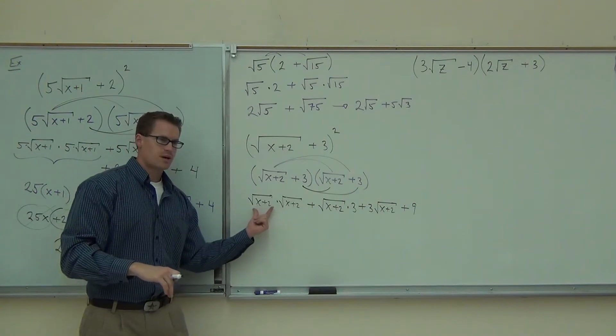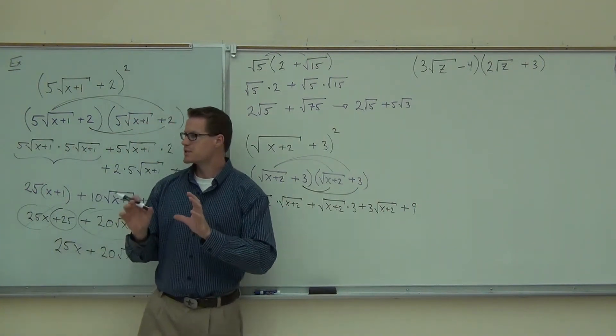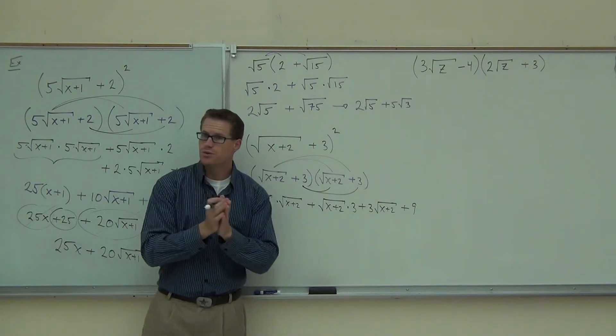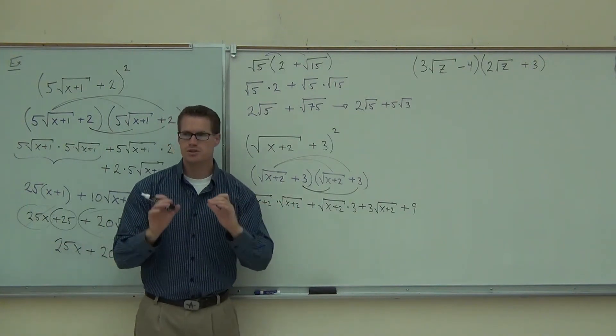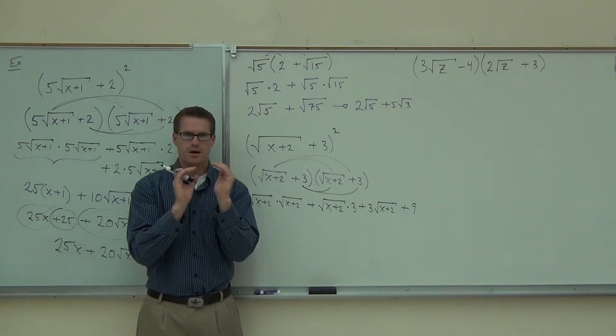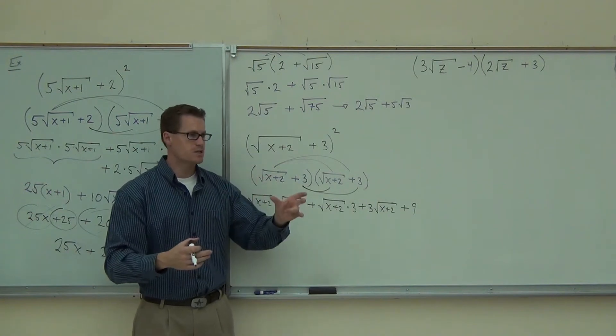Over here, this has a radical, so does this one. They're the same radical. That means that you can actually multiply them together. If you do, you're going to get the square root of x plus 2 squared. Are you with me on that? This is where we get the square root times itself gives you the radicand.